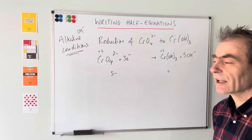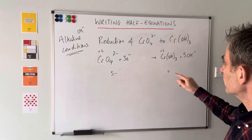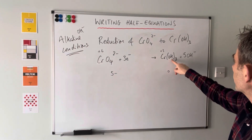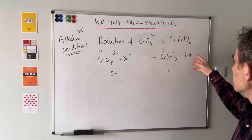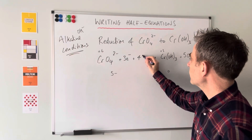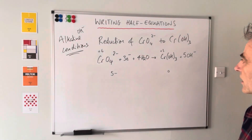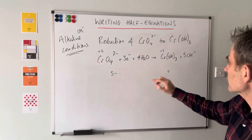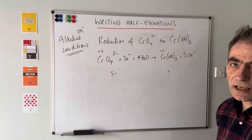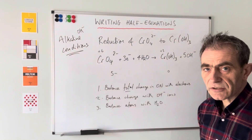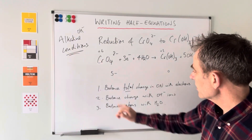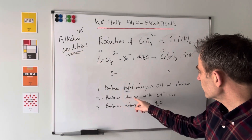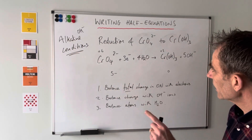All we do last is put water in to balance the atoms. Three hydrogens plus five is eight hydrogens, so we need four H2O's. Quick check: four oxygens on the right plus those four gives eight oxygens; three plus five is eight on the left. So that's how you do that one. Summary of the three steps for alkaline conditions: step one, balance the total oxidation number change with electrons; step two, balance the charge with hydroxide ions; step three, balance the atoms with H2O.